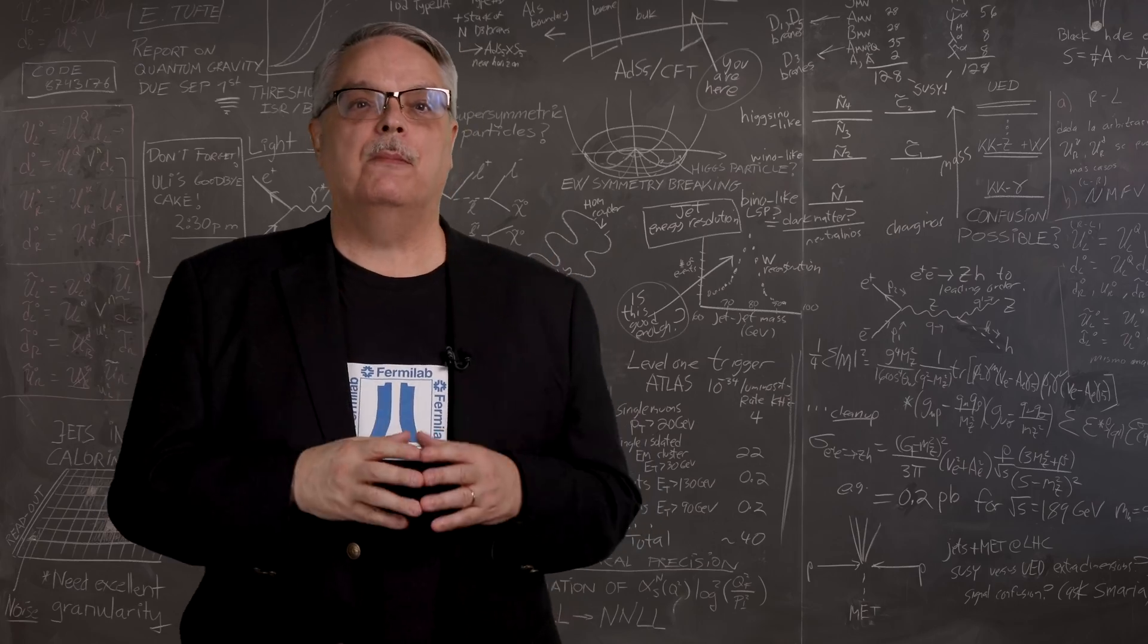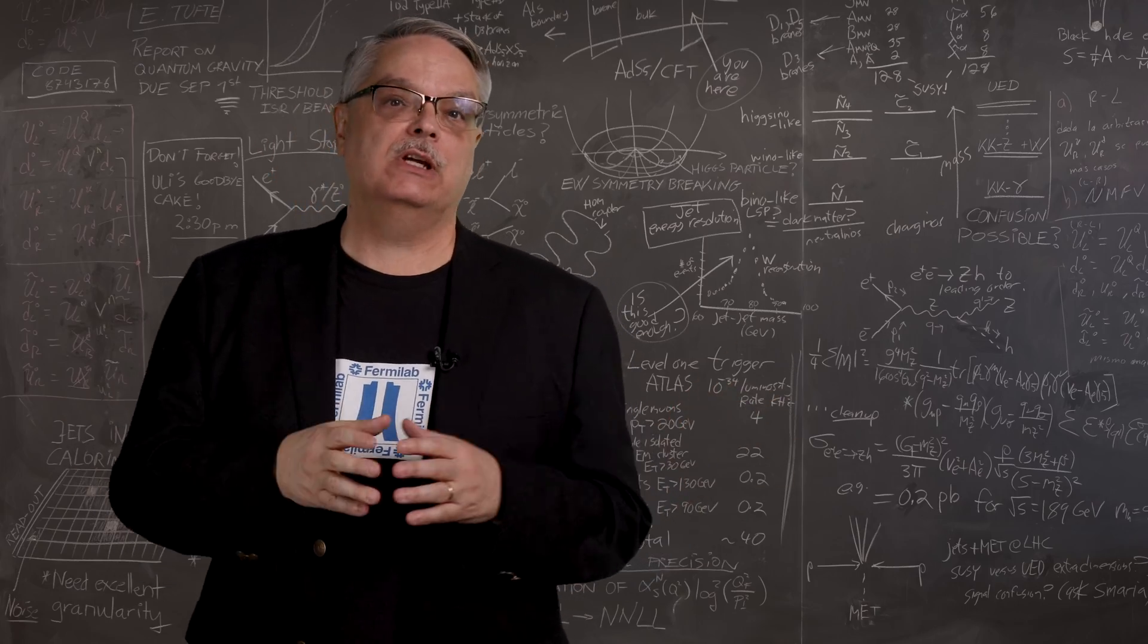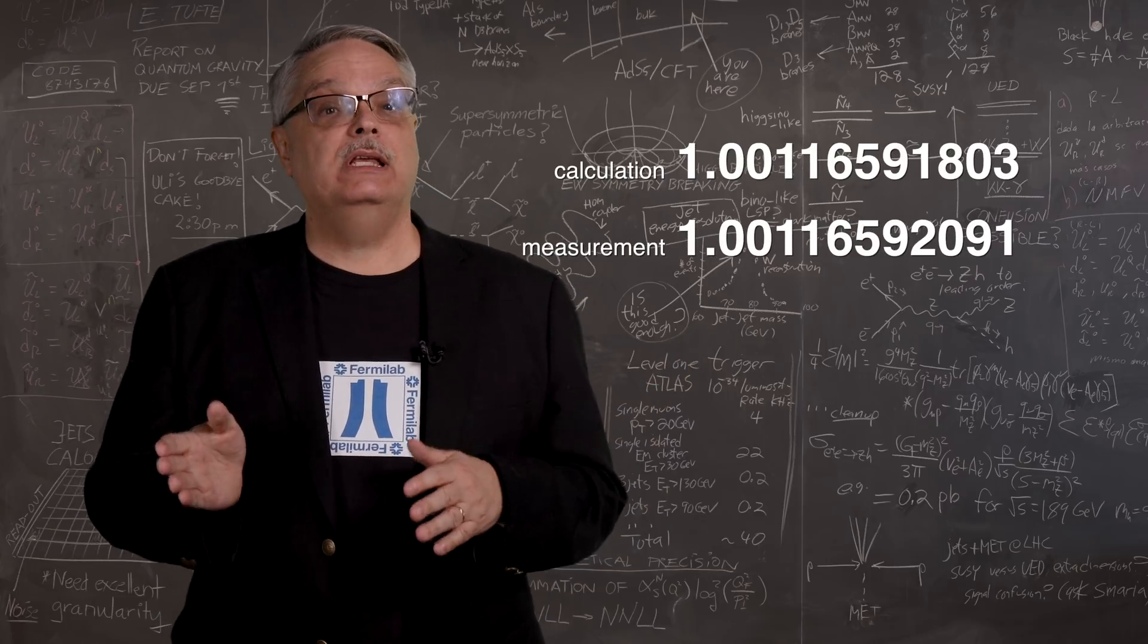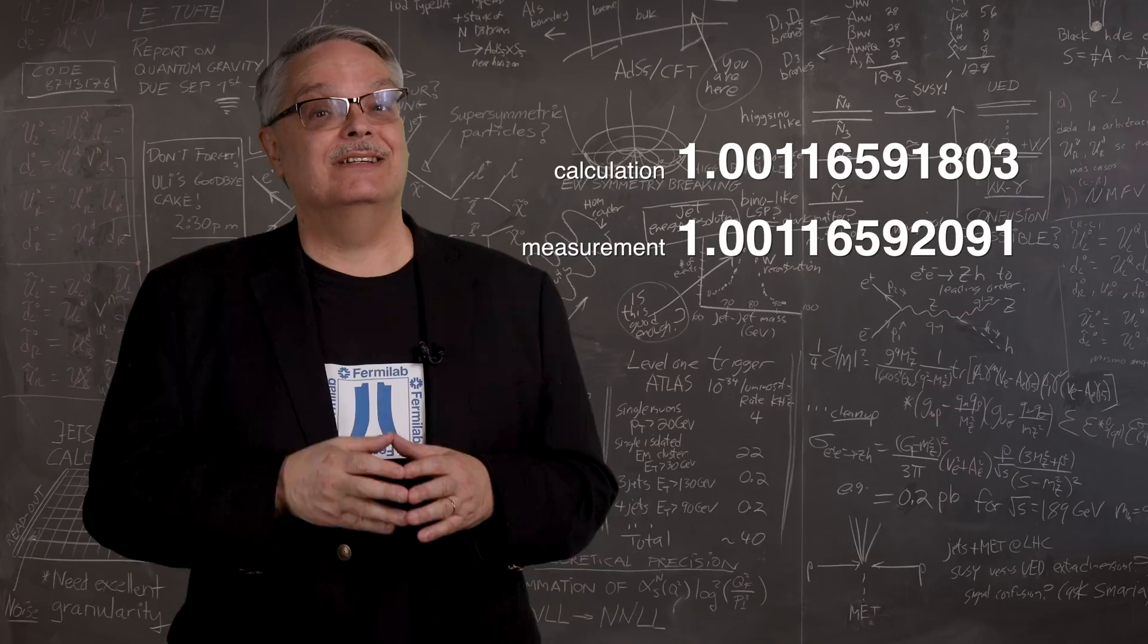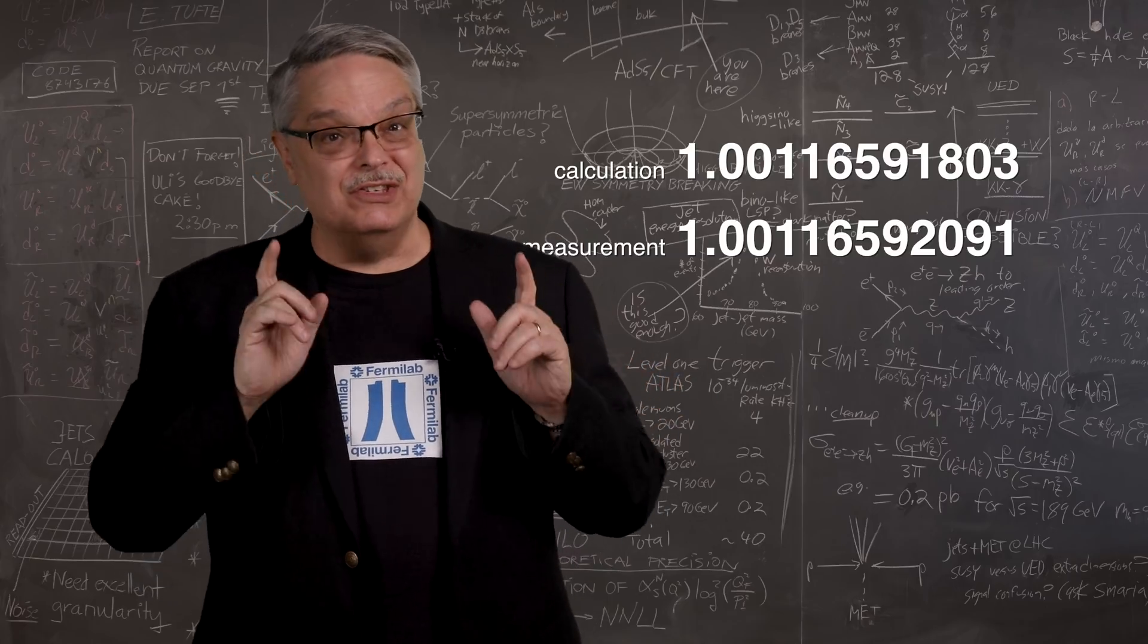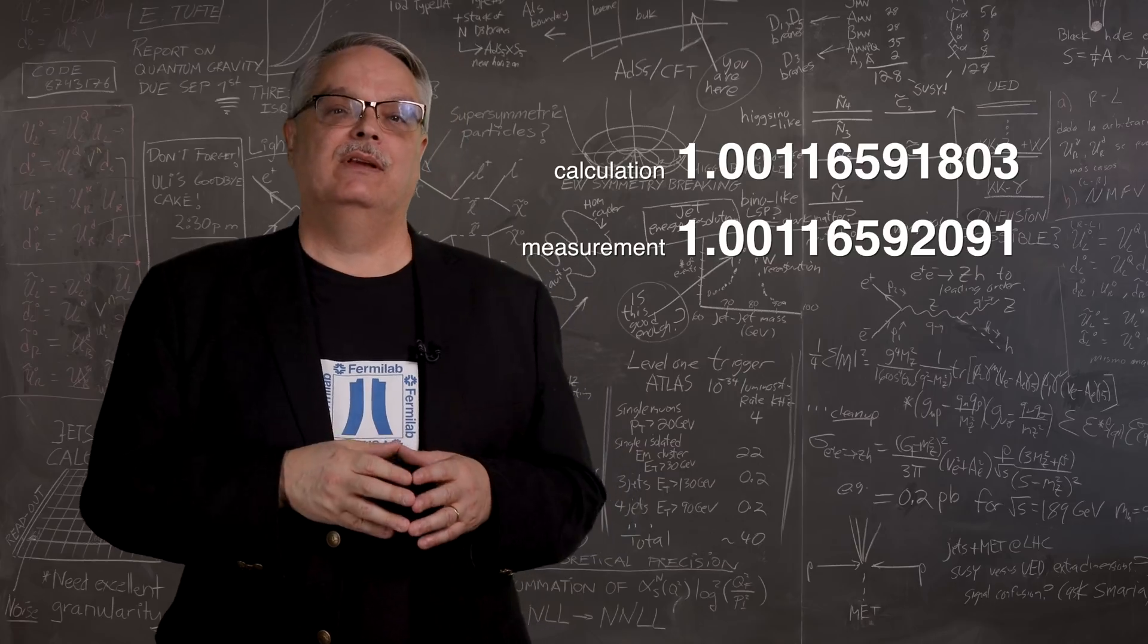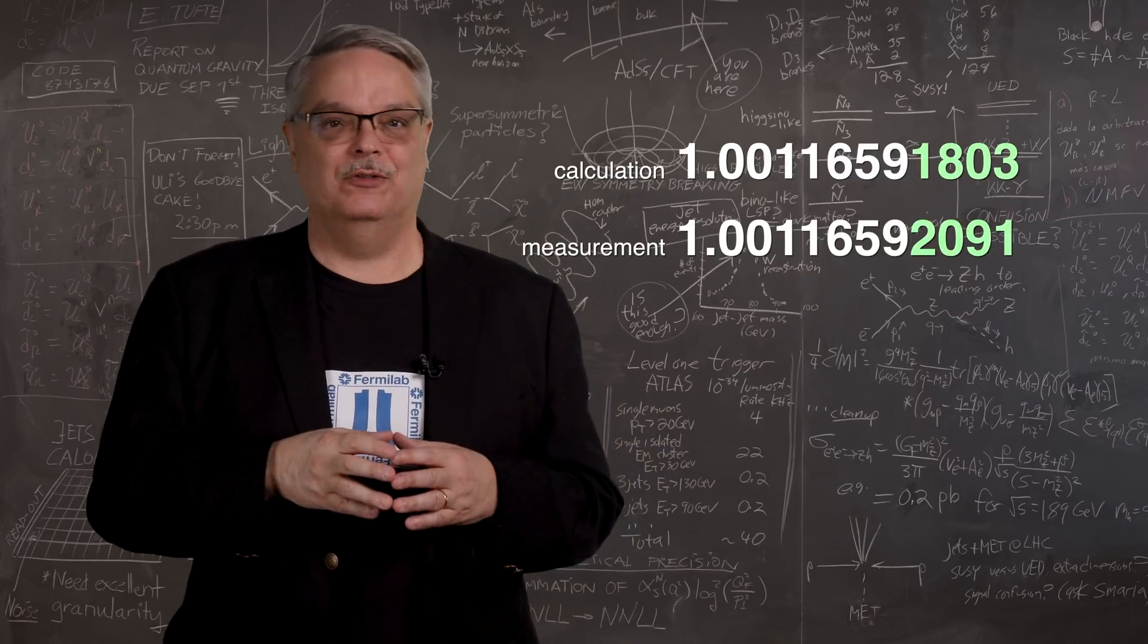This precession property has been extensively studied for a subatomic particle called the muon, which is basically a chubby electron. Both the calculation and measurement of this property have been conducted to staggering precision, to 12 decimal places in fact. But here's the exciting thing. The measurement and prediction disagree.